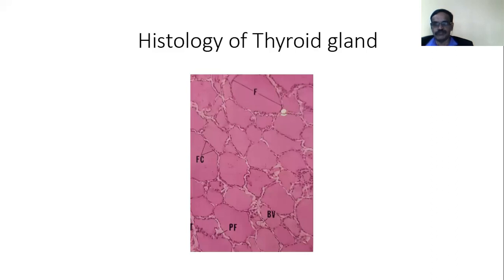When we see the microscopic anatomy of the thyroid gland, the cut section shows thyroid follicles lined by follicular cells. They are cuboidal epithelial cells which surround the colloid. Centrally, there is colloid — the pink staining in the center — and it combines with thyroxine T4, thyroglobulin, etc., and is stored.